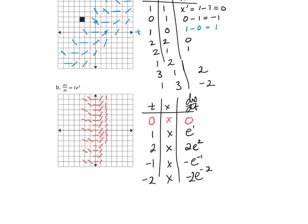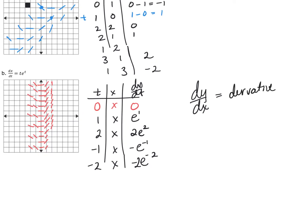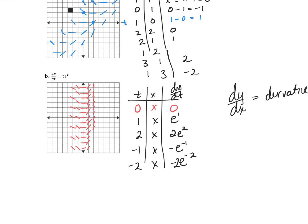So I'm choosing values for X and T, plugging into the differential equation, and that output represents the slope of the short line at that point. We know from calculus that dy/dx—the derivative—represents the slope of the tangent line. Here, dX/dT is the slope for our directional field. All segment lengths are ideally drawn the same, and each output value I get is the slope at that ordered pair.